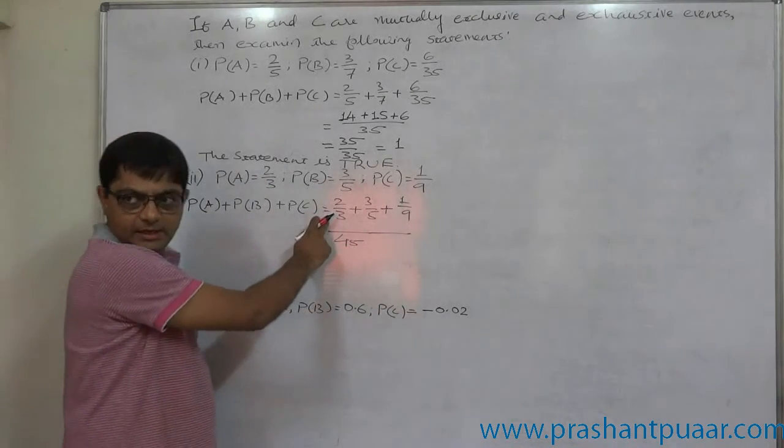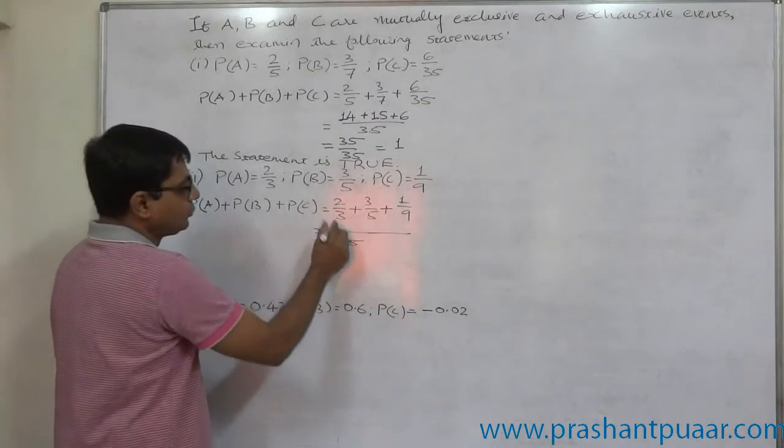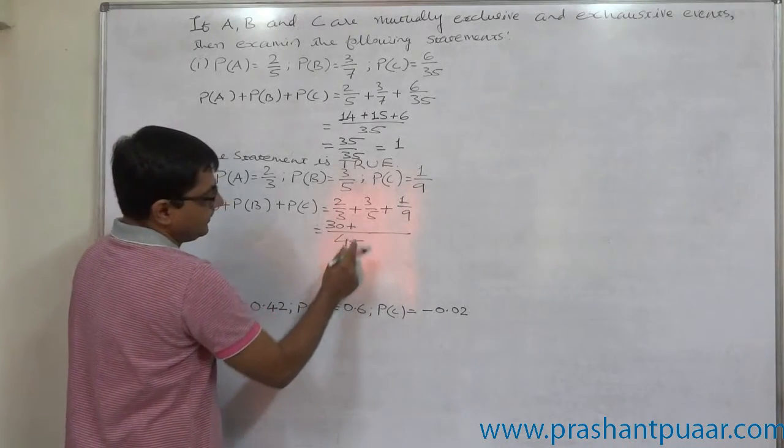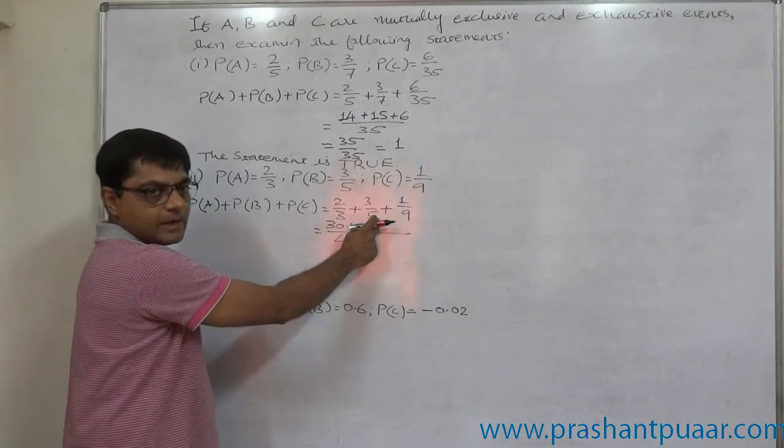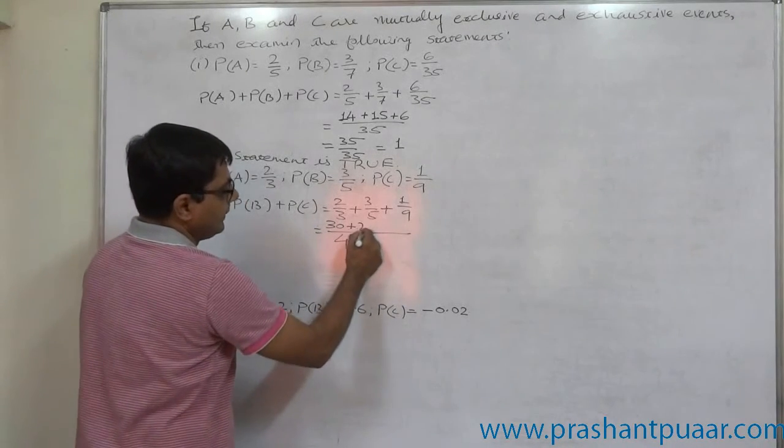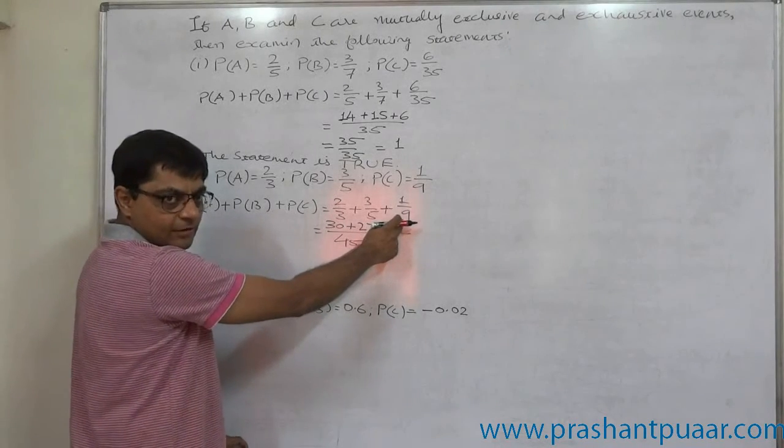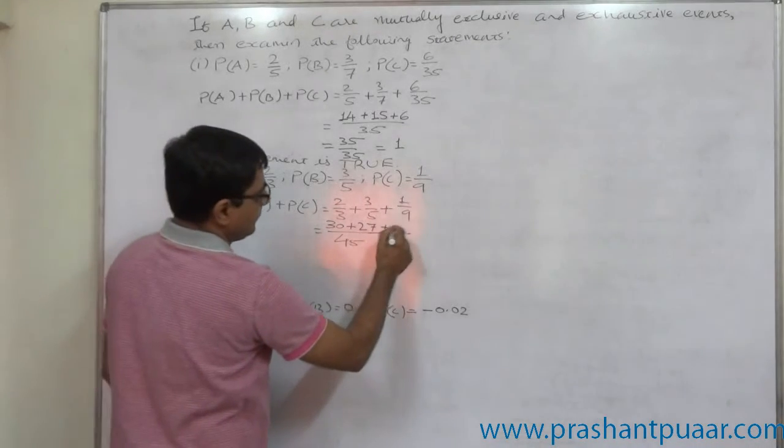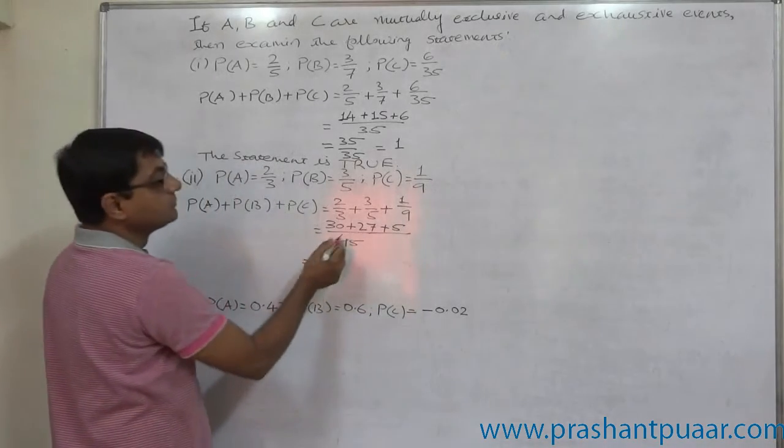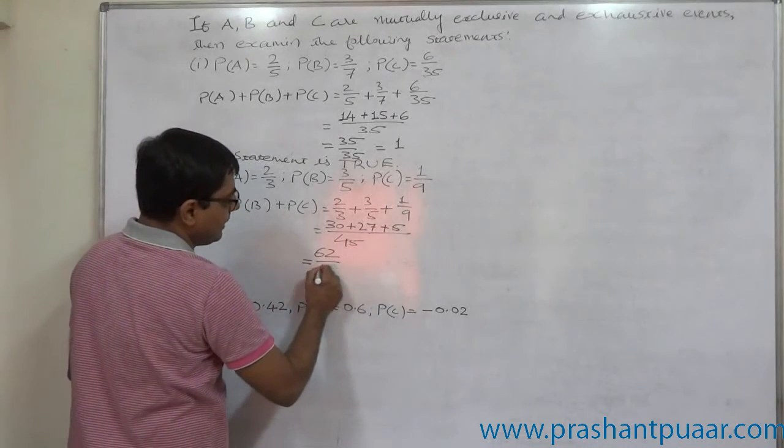45 divided by three is 15, 15 into two is 30. Plus 45 divided by five is nine, nine into three is 27. 45 divided by nine is five, five into one is five. It comes to 62 divided by 45.